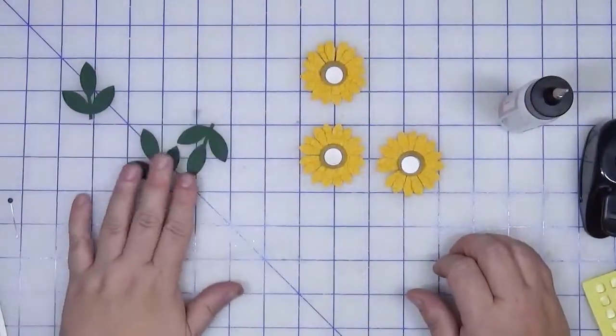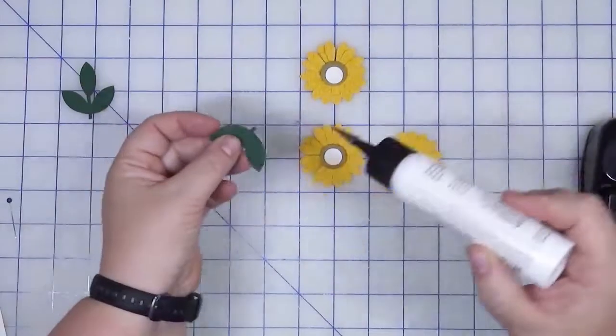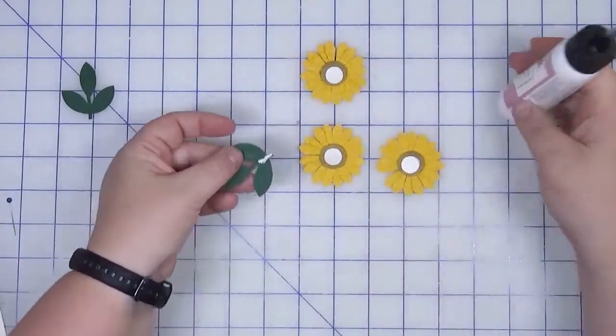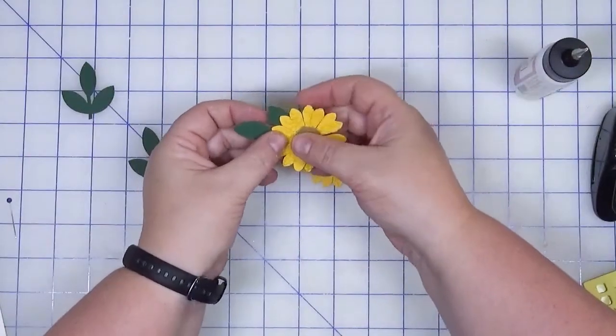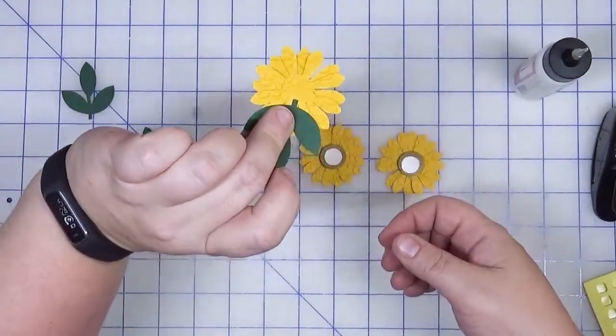The next step is to add the leaves, so we're just going to add a little bit of adhesive on the stem and we're just going to kind of tuck these behind like so.